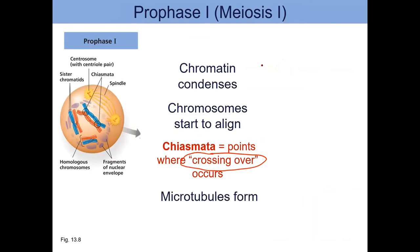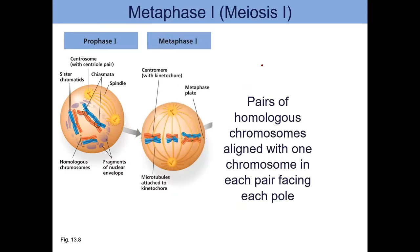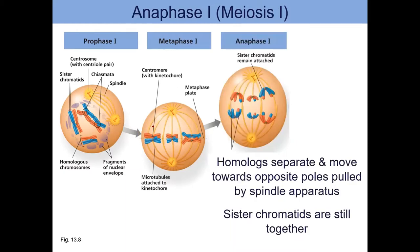So in prophase I: chromosomes condense, homologous chromosomes start lining up and cross over, the nuclear membrane is gone, and microtubules start to form. Lots going on in prophase I — at least four or five things. In metaphase I, chromosomes line up along the middle, but notice the homologous chromosomes are lined up together after the crossing over, before they separate. In anaphase I, those homologous chromosomes separate. The sister chromatids are still together, but the spindle fibers pull each homologous chromosome apart.